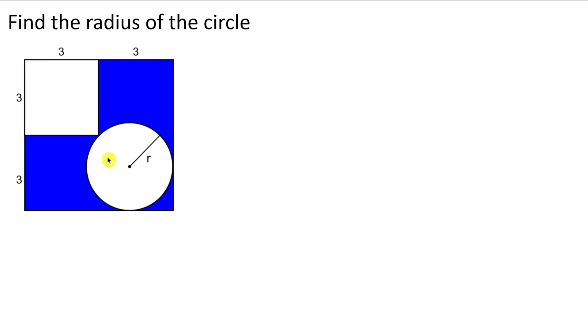This problem asks us to find the radius of a circle. We have a circle with radius r, a smaller square of side 3, and a bigger square of side 6.